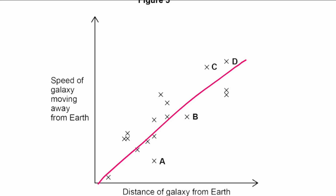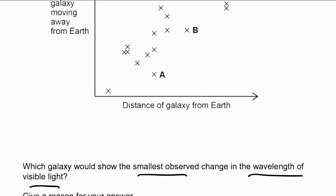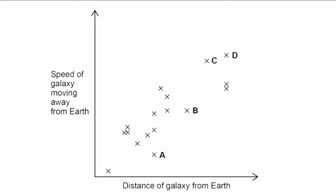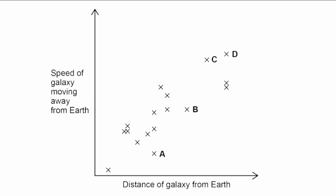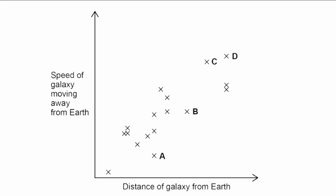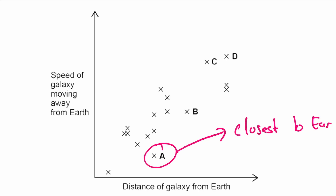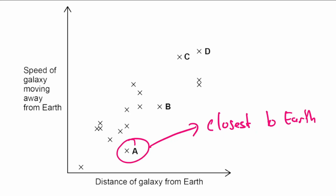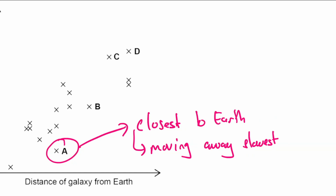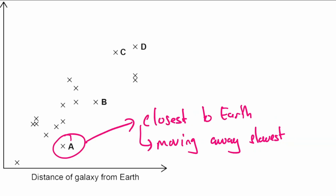As a galaxy moves away faster, the observed wavelength of its light becomes more stretched. So the smallest observed change in wavelength corresponds to the galaxy moving away most slowly. From the graph, that is galaxy A — it is the closest to Earth and therefore moving away from us the slowest, producing the smallest wavelength shift.